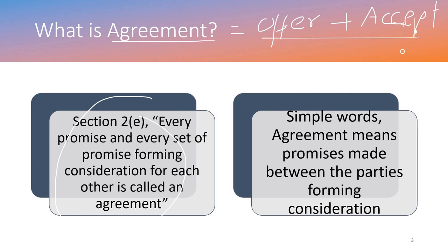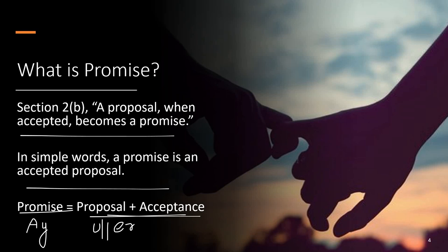In simple words, an agreement means promises made between parties forming consideration. If I make a promise to you and there is a consideration — consideration being the value involved — that forms an agreement. We will study consideration in deep detail later; for now, just understand it means something of value. The promise must also have consideration, and that is one more condition added.